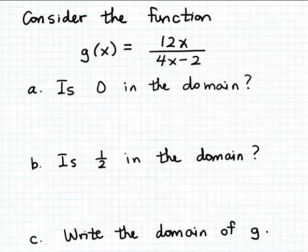Recall the domain of a function is the set of all numbers that, when you use these numbers as input values to the function, you'll get meaningful matching output values. Because we don't know how this function g is going to be applied in practice, a meaningful output value is just a real number output value. So any number we can input to this function that gives us a real number output would be an element in the domain of the function.